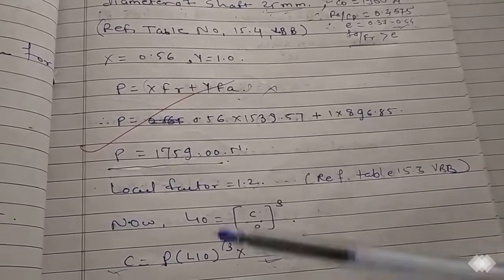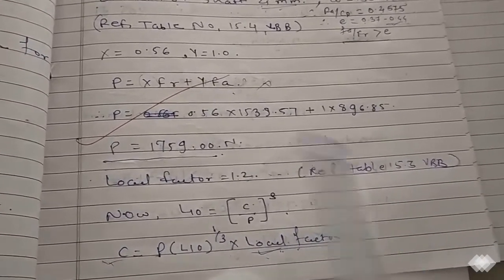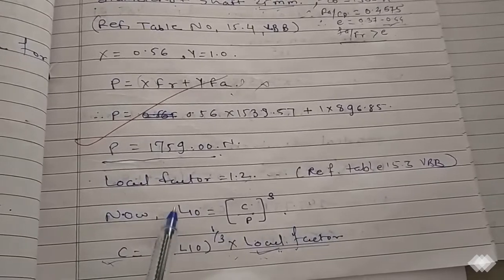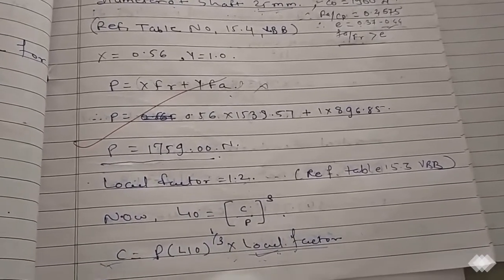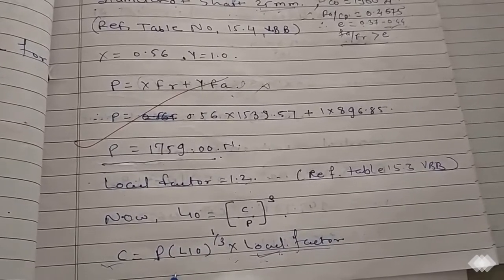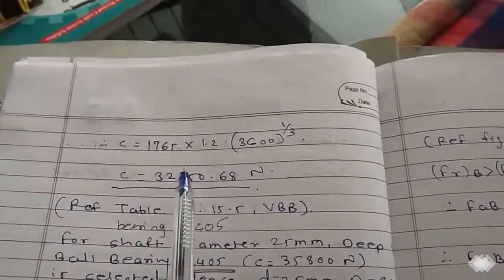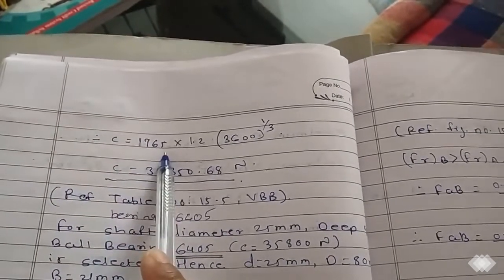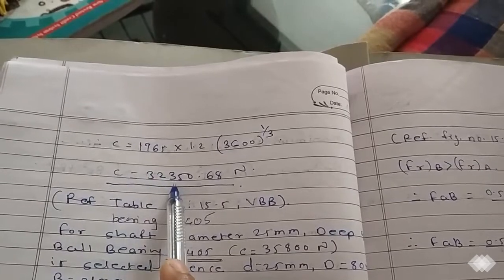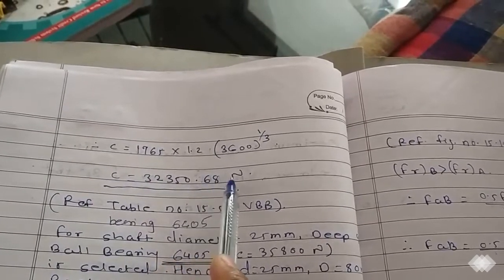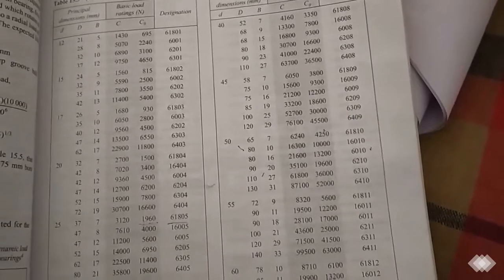Now we know that L10, the rating life, is equal to (C/P) to the power of 3. So C equals P multiplied by L10 to the power of 1/3, then multiplied by the load factor. After putting in all values, we get C equals 32,350.68 N.